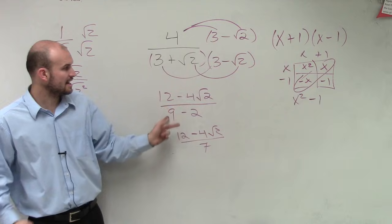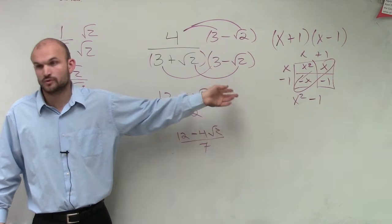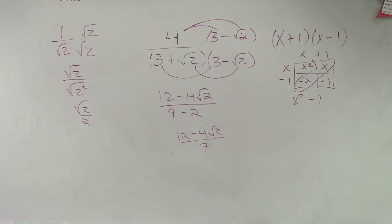3 times 3 is 9. Square root of 2 times negative square root of 2 is a negative, negative square root of 2 squared, which is just 2. Negative 2. Okay?